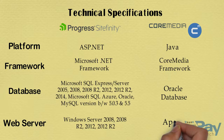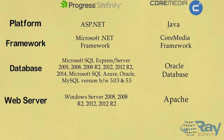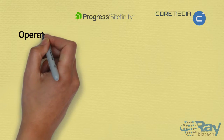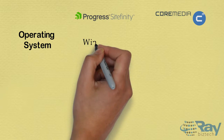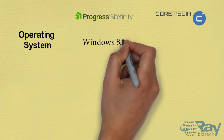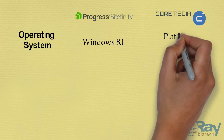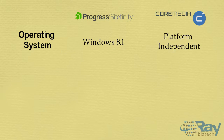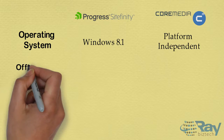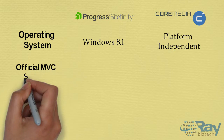Web server: for Progress SiteMedia it's Windows Server 2008, 2008 R2, and 2012 R2; for CoreMedia it's Apache. Operating system: for Progress SiteMedia it's Windows 8.1; for CoreMedia it's platform independent.